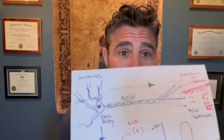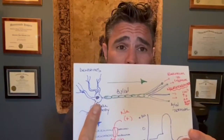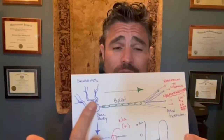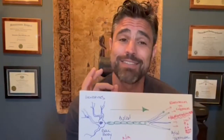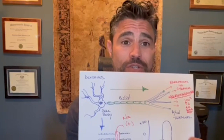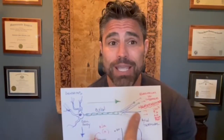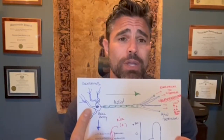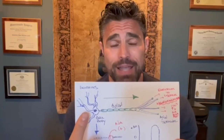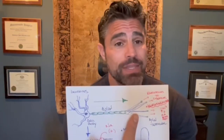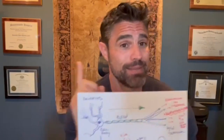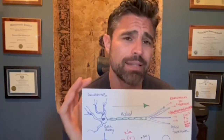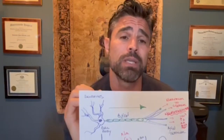You guys can see my rudimentary drawing of a neuron — you have the cell body and you have the axon. These are the dendrites that receive information. Here's the kicker: to communicate with another neuron, what it has to do is have an electrical potential travel down this axon. In order for that to happen, it's called an action potential.